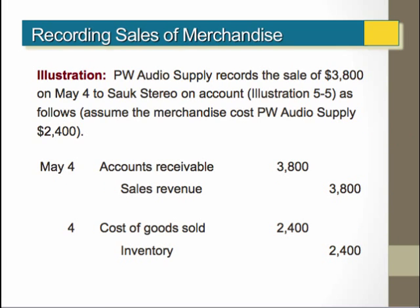In this particular situation, with PW Audio Supply as the seller, when they sell $3,800 on May 4th, they would debit accounts receivable for $3,800 and credit sales for $3,800. Assuming the cost of the inventory was $2,400, we would also debit cost of goods sold and credit inventory for $2,400.